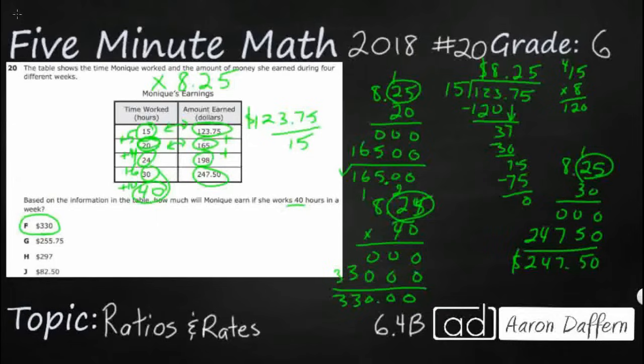Here's a shortcut we could have done, guys. If she makes $165 in 20 hours, for 40 hours, all you've got to do is double it, right? Double it, you get $330.